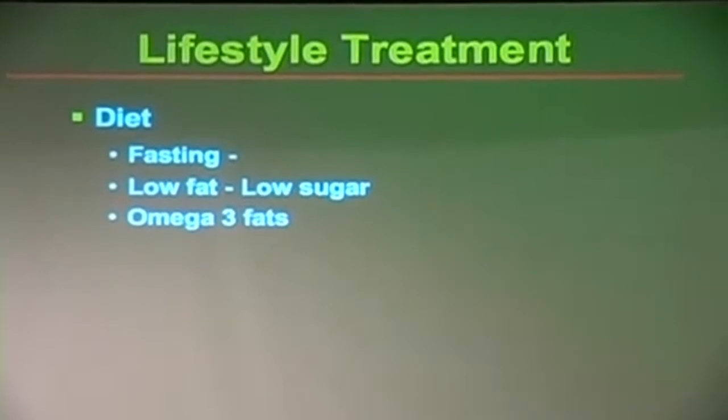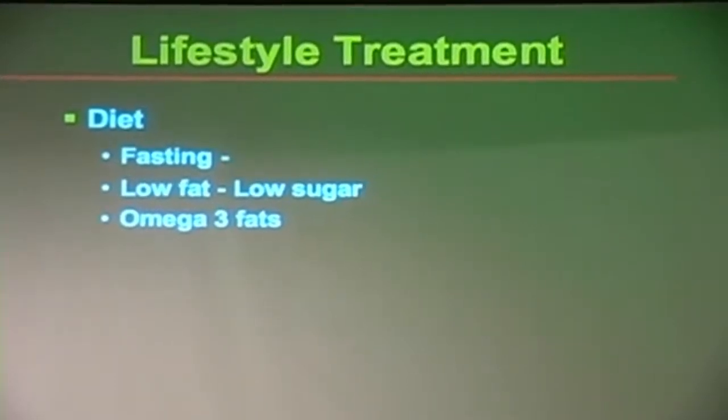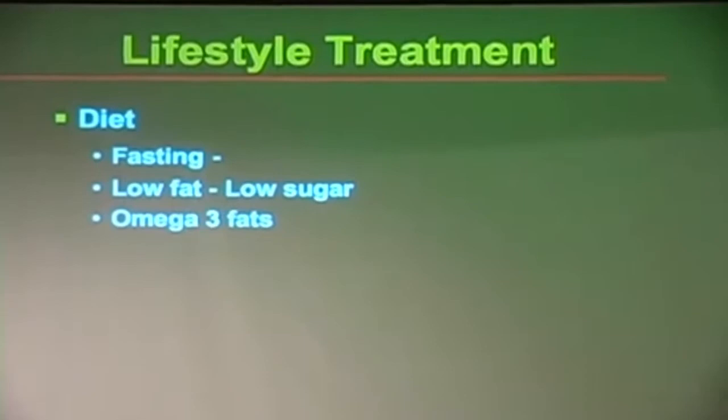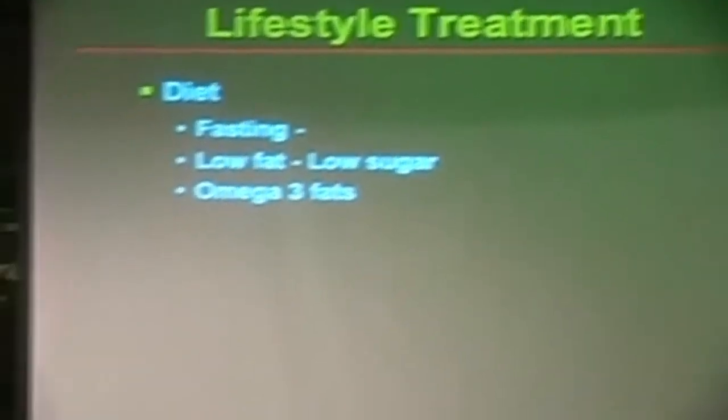Diet can have something to do with it as well. Omega-3 fats — you can get them from fish, but we make them ourselves if we eat enough plants. Even tomatoes, lettuce, and cabbage have omega-3 in them; you don't have to get them from fish oil. When you have enough omega-3, it decreases inflammation in the body and joint pain tends to get better.